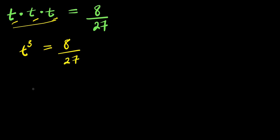So let's multiply this out. We have t times t, that is t squared. t squared times t is t to the power of 3, and this equals 8 divided by 27. We can express 8 as 2 to the power of 3, divided by 27, which we can express as 3 to the power of 3.